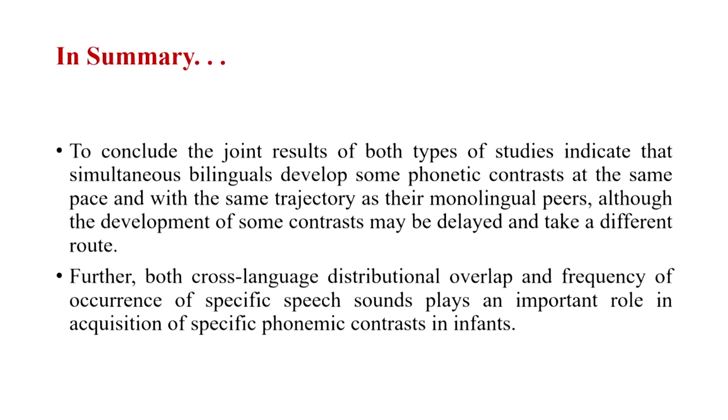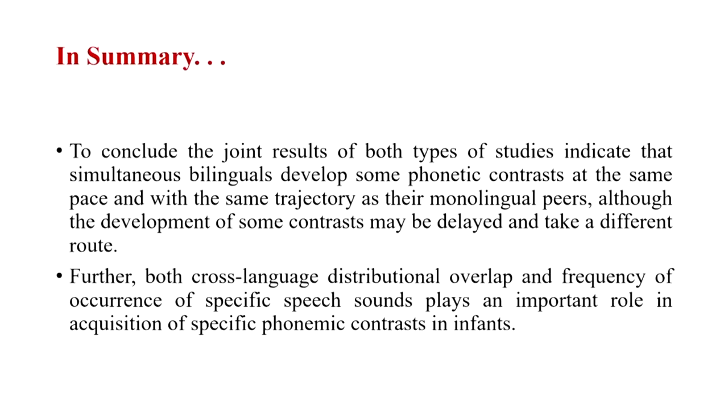To conclude, if you consider the joint results of both types of studies — from sequential bilinguals to simultaneous bilinguals — you could say that simultaneous bilinguals develop some contrasts at the same pace and with the same trajectory as their monolingual peers, although the development of a few other contrasts may be slightly delayed and may follow a different route. Both cross-language distributional overlap as well as the frequency of occurrence of specific speech sounds in different languages play a very important role in how these individuals acquire speech sounds. In the next lecture, we will talk more about words and how children start to segment the word stream. Thank you.